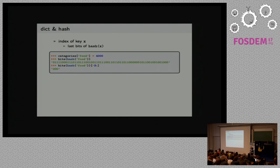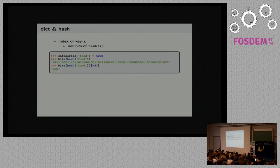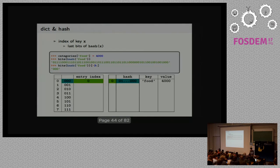Now we have our key and we want to find its index in the indices array, which is of size 8 at first. We hash the key to get a 64-bit number, then take the last three bits of it. Why three? Because we have eight entries, and to index eight entries we can use three bits to count from 0 to 7. So let's add an entry — food. We hash food, which gives us this number. We take the last three bits, which turn out to be 0, 0, 0. We add a new entry in the entries table with the hash, key, and value. In the indices table, we go to index 0, 0, 0 and say this maps to entry index 0.